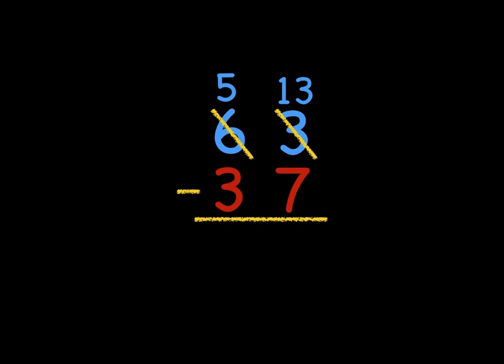Now we can subtract our ones. What is thirteen minus seven? Thirteen minus seven is six. So we write that down in our ones column. Then we subtract our tens. What is five minus three?